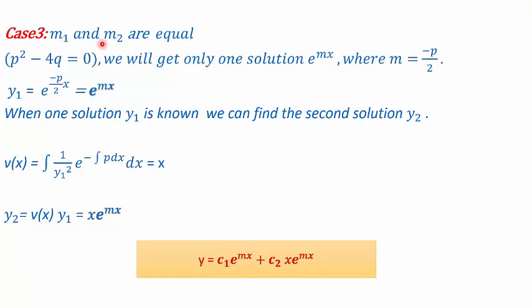Case 3: when m1 and m2 are equal (repeated roots), which happens when p²−4q = 0. We have only one root, giving solution e^(mx). To find the second solution y2, we use the formula v(x) = ∫ (1/y1²)·e^(−∫p dx) dx. Substituting y1 and solving gives v(x) = x, so y2 = x·e^(mx). The general solution becomes y = e^(mx)(c1 + c2·x).